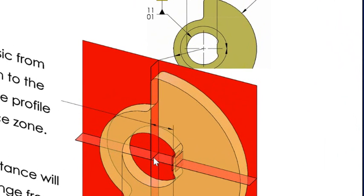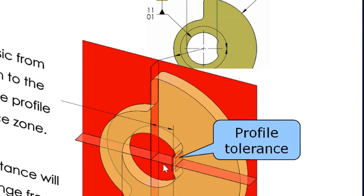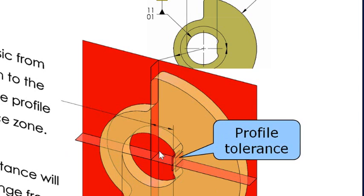That axis is the intersection of two planes, two perpendicular planes. And here is my profile tolerance from that origin.